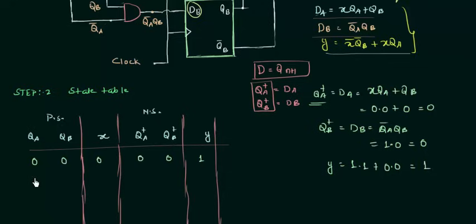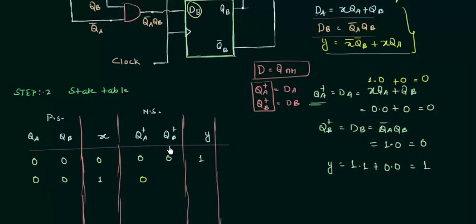For the second case, QA=0, QB=0, X=1: DA equals 1·0 OR 0 = 0, so QA plus = 0. DB equals QA complement AND QB = 1·0 = 0, so QB plus = 0. For Y: X complement is 0, QB complement is 1 — so X complement QB complement = 0; XQA = 1·0 = 0. So next state is 0,0 and output Y = 0.